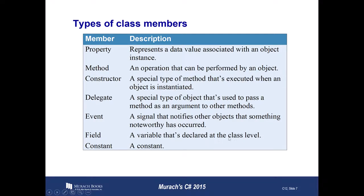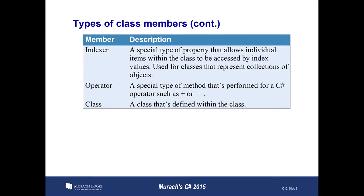A field is a variable declared at the class level, which is slightly different from a property, though these names are often interchanged. A constant is a field or property that never changes. There are also less common class members: an indexer, which is a special type of property that allows individual items within your class to be accessed by a particular index value, similar to an array. There are operators — you can overload the plus or minus operator, like if you're building unique lists. And you can also have a class within a class, such as a node or something small that only your class uses.